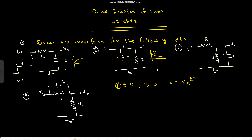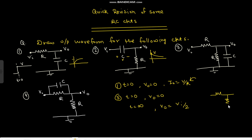In the third circuit, at T equals zero the capacitor is shorted, so V_out is zero. At T equals infinity the capacitor is open-circuited. The circuit then acts as a voltage divider, so V_out equals V_in by two. The output waveform therefore goes from zero to V_in over two.